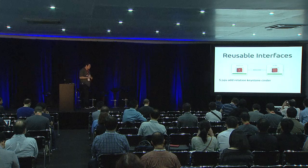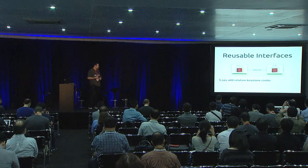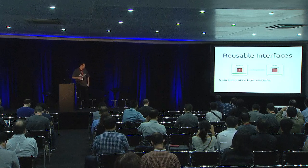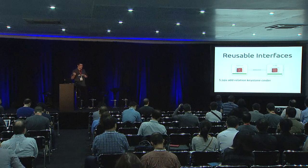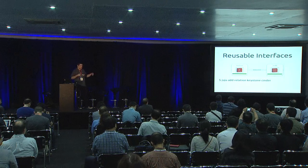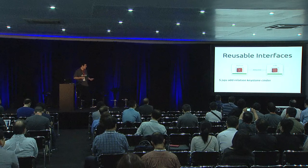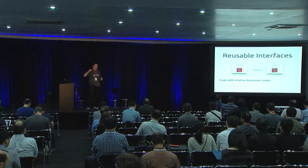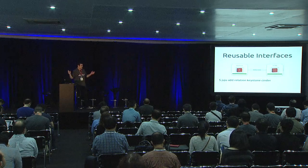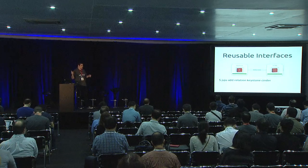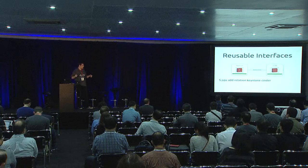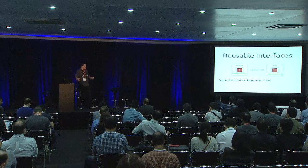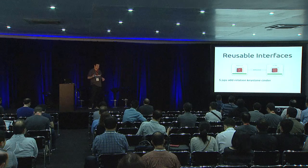But installing and configuring the initial system is only part of the process. We also need to make sure that the services we deploy integrate well with the other services in our environment. Juju has a really powerful concept known as relations. Each charm is responsible for configuring and managing the service it's responsible for. But the charms can also define and export interfaces that define how they interact with other services within the environment, creating a back-and-forth authentication conversation.